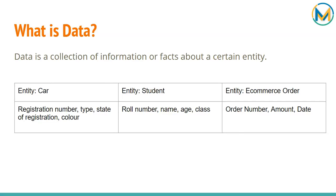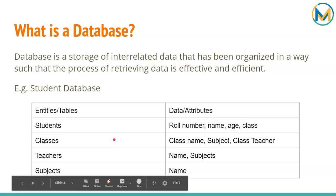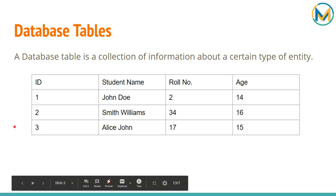Now that we know what data is, let us look at what a database table is. When we arrange data in the form of tables with rows and columns, we call it a database table. A database table is a collection of information about a certain type of entity. For example, the entity here is student, and the data collected includes name, roll number, and age. We can have multiple entries, so this is a database table.